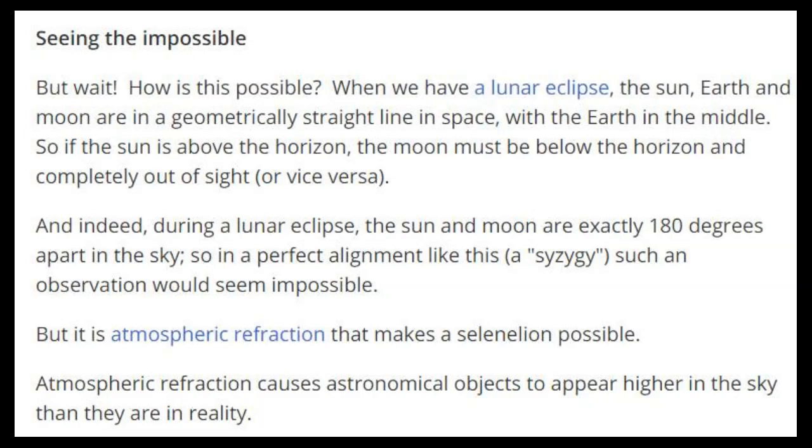And indeed, during a lunar eclipse, the sun and moon are exactly 180 degrees apart in the sky. So in a perfect alignment like this, a syzygy, such an observation would seem impossible. But it is atmospheric refraction that makes a selenelion possible. Atmospheric refraction causes astronomical objects to appear higher in the sky than they are in reality.